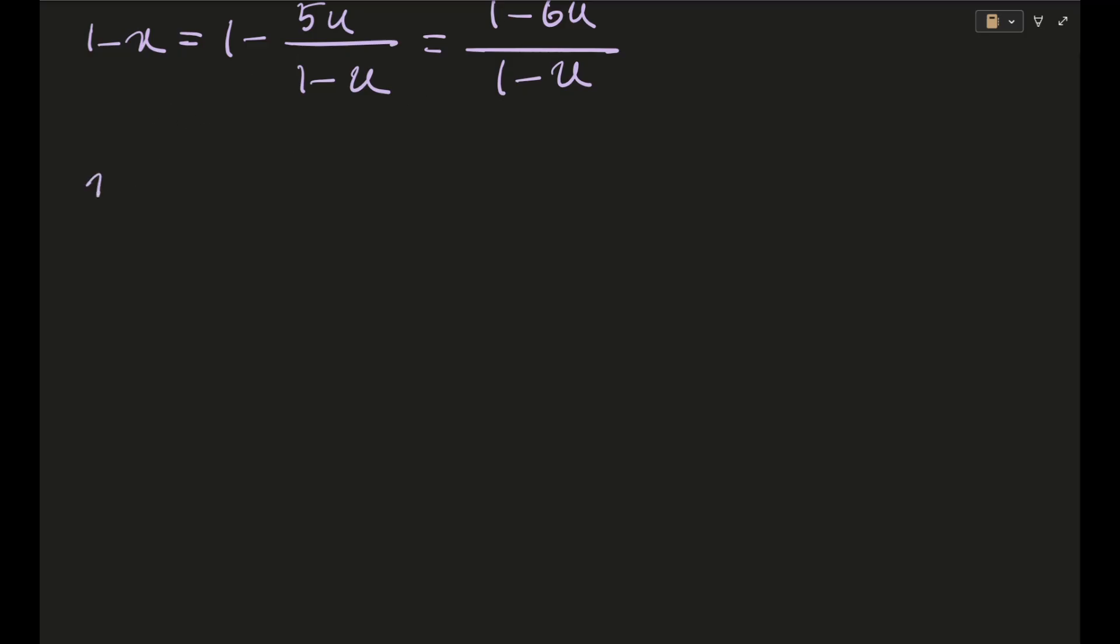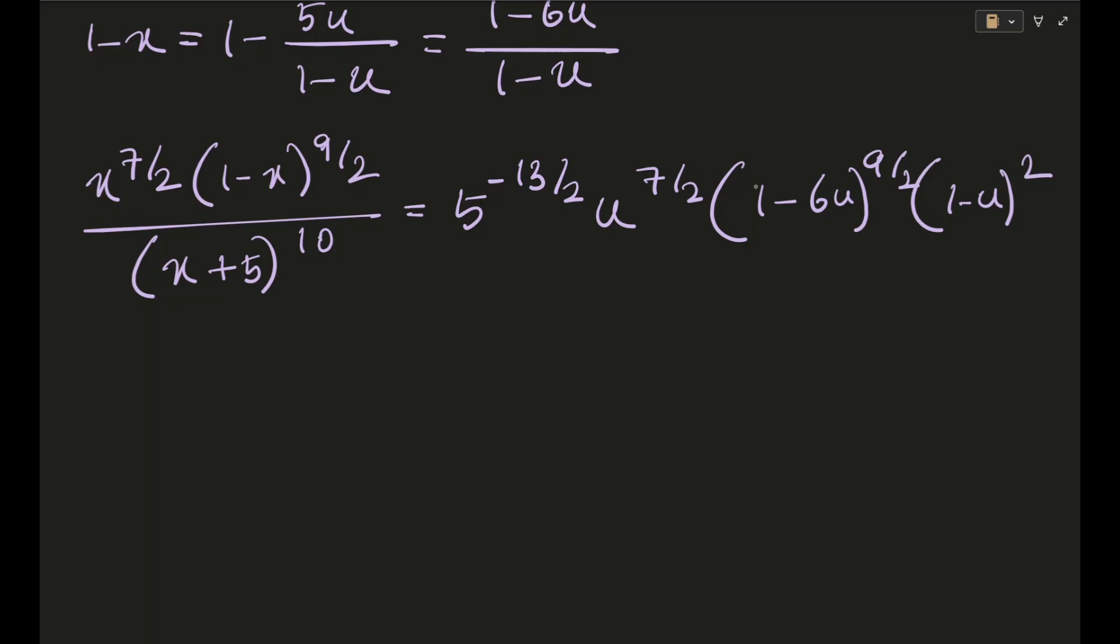So your x^(7/2) into (1-x)^(9/2) by I guess this was (x+5)^10. This thing will come out to be 5^(-13/2) into u^(7/2) into (1-6u)^(9/2) into (1-u)^2. Okay, first thing. So this is without that dx which we are going to introduce basically. So B will finally come out to be integral of this thing, right, integral of this thing obviously into dx.